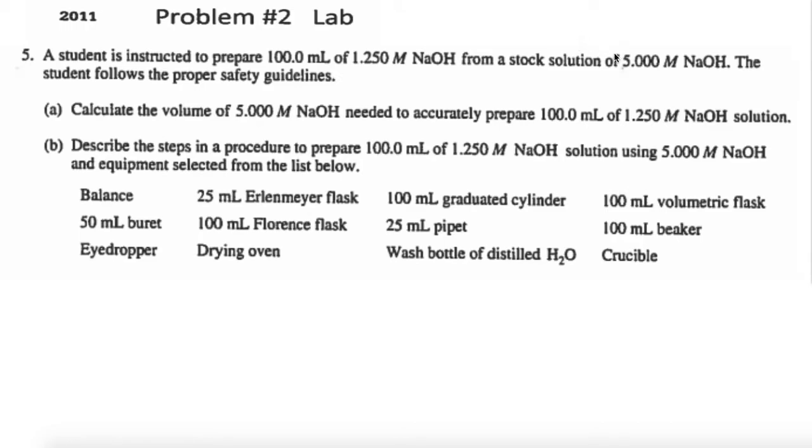Hi, I'm going to do lab problem number two. Only parts A and B are appropriate this year. We don't need to do the rest of it, so I'll explain that as I get to it. A student is instructed to prepare 100 milliliters of 1.250 molar NaOH from a stock solution of 5.000 molar NaOH. Calculate the volume of 5.00 molar NaOH needed to actually prepare 100 milliliters of 1.250 molar NaOH.